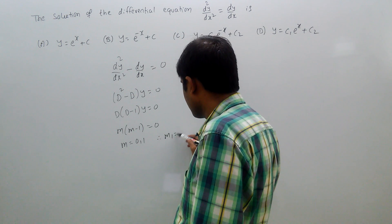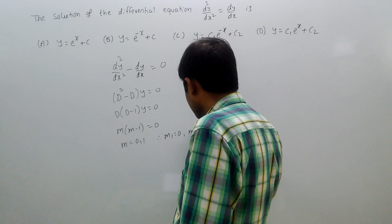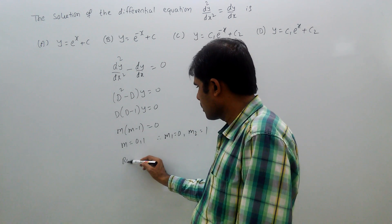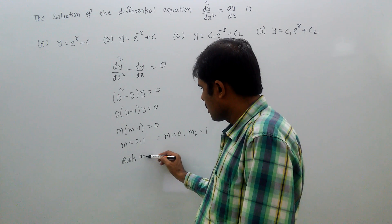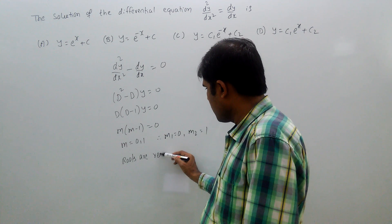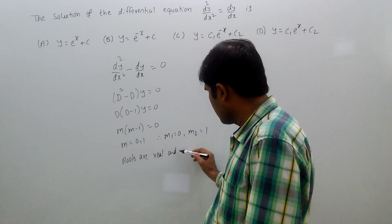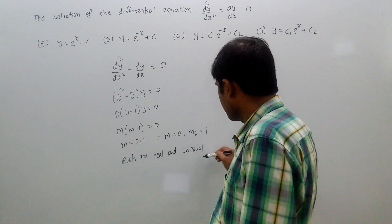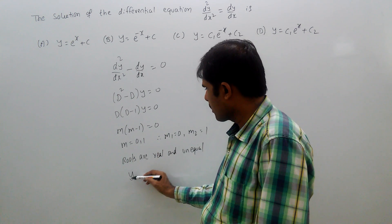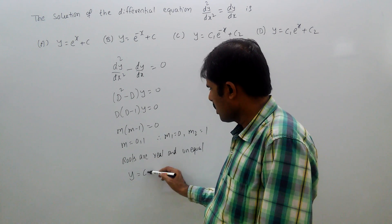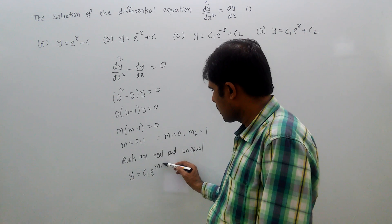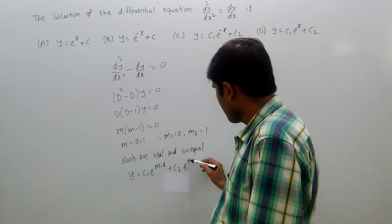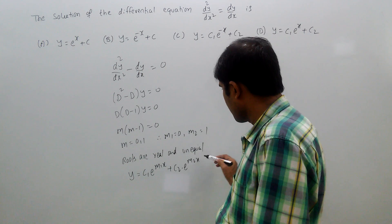That means m equal to 0 comma 1. Therefore, m1 equal to 0, m2 equal to 1. So, roots are real and unequal. Therefore, the solution is y equal to c1 e power m1 x plus c2 e power m2 x.